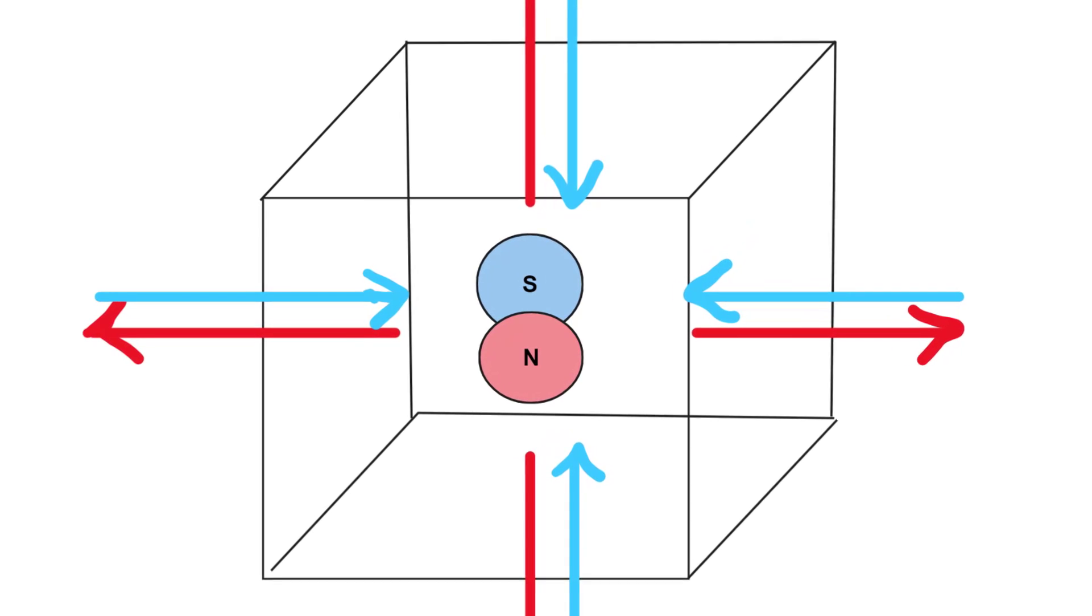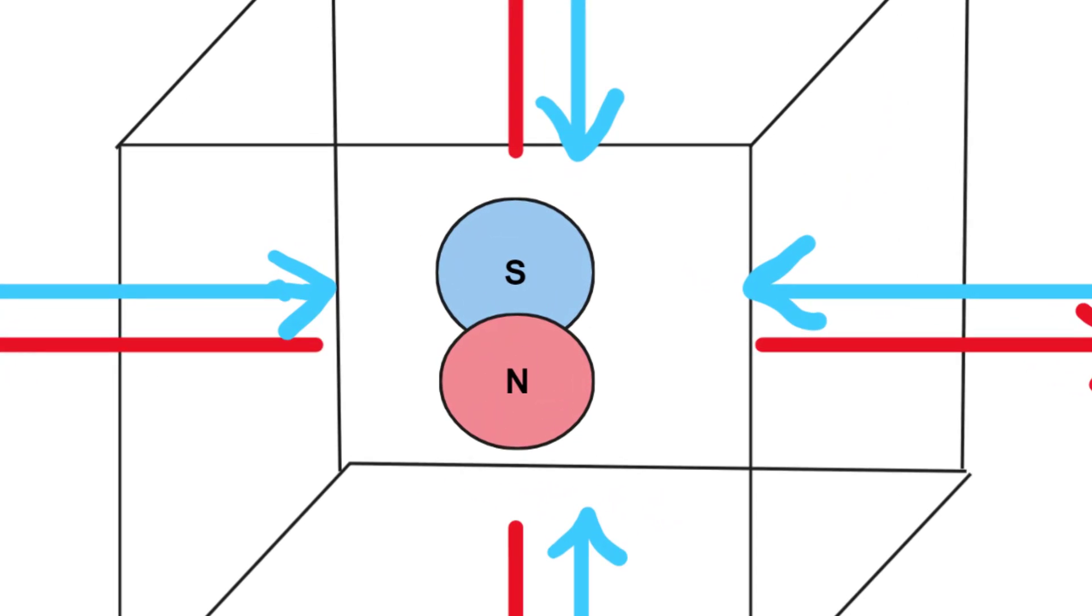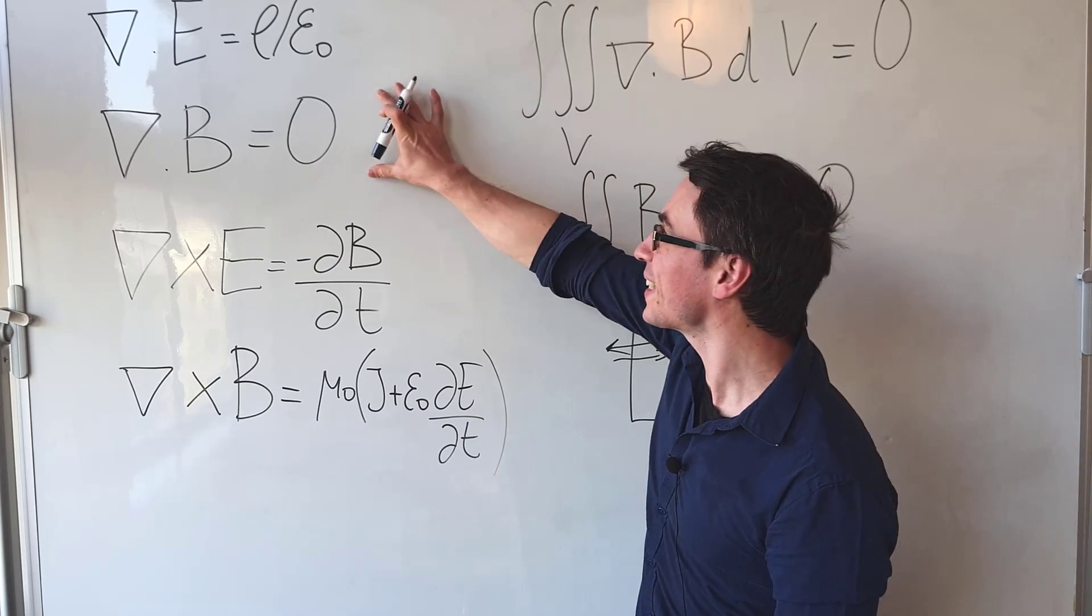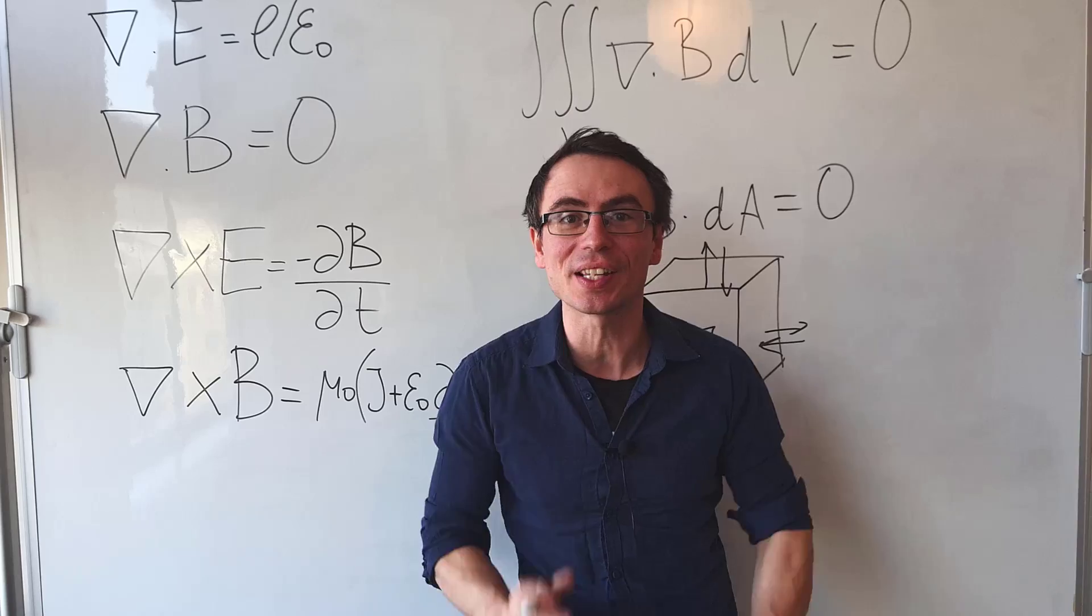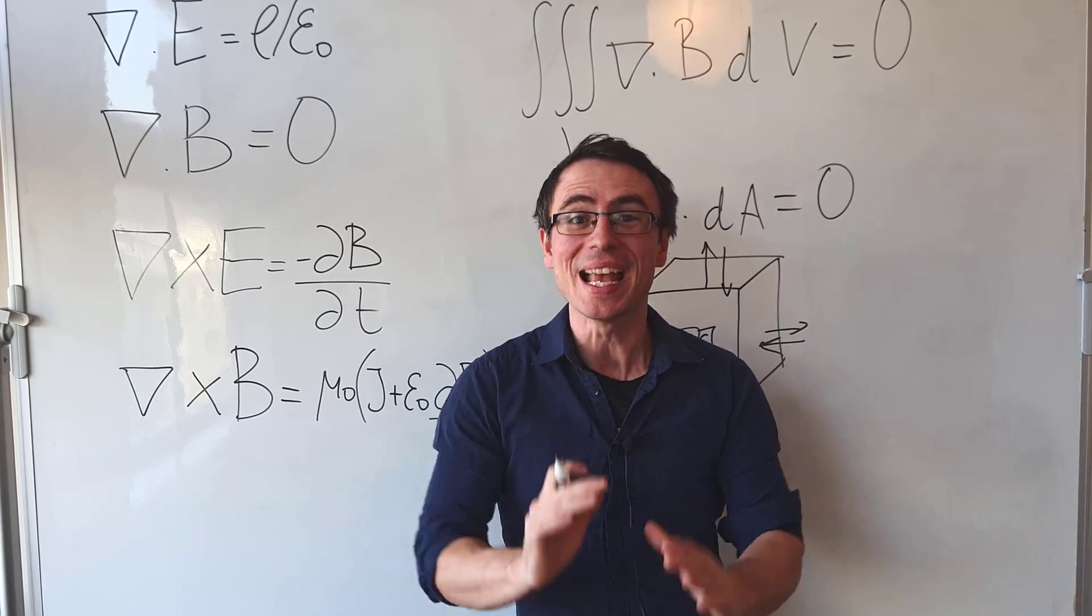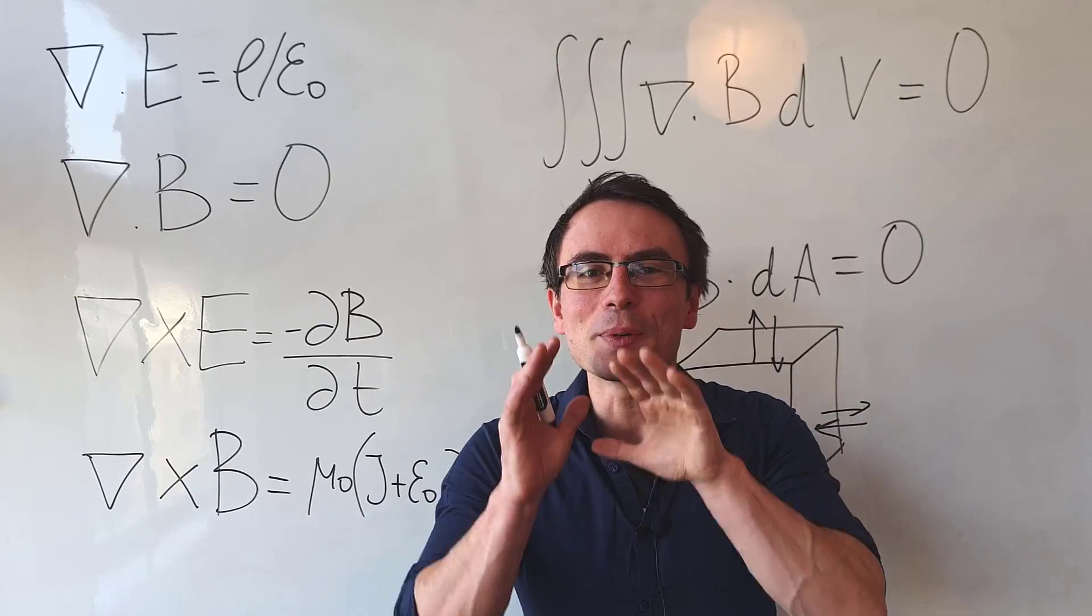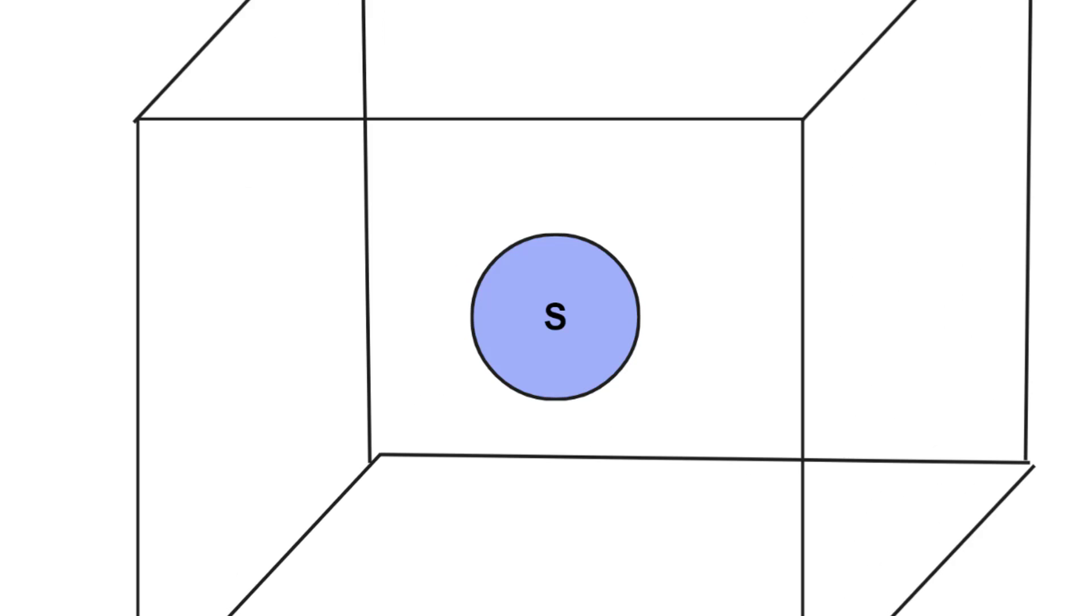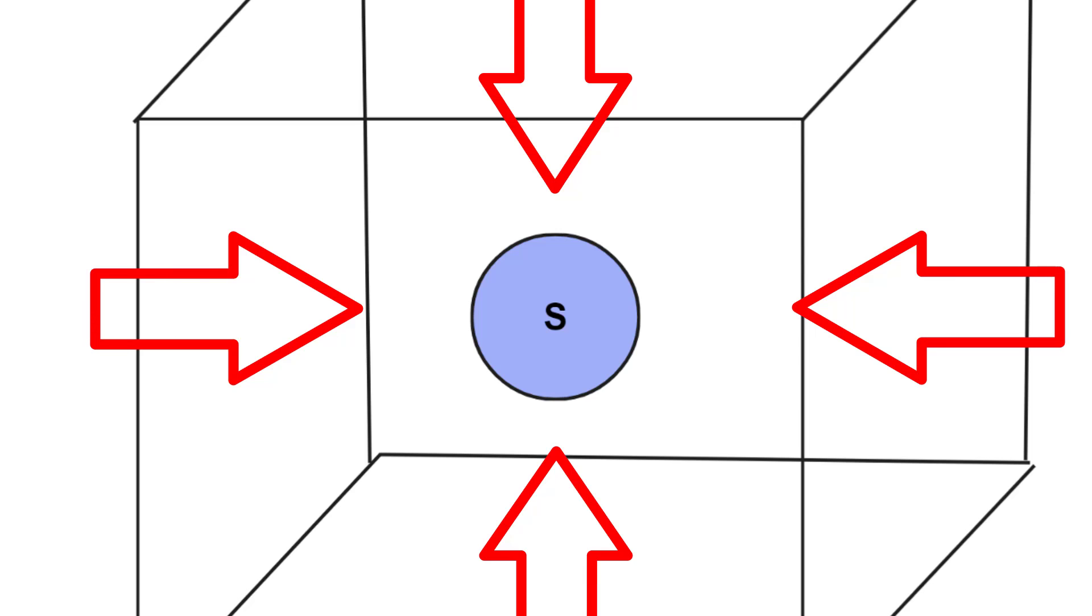The only way this could happen is if there was a north pole and a south pole. In other words, this equation is telling us that magnetic monopoles cannot exist. We can never have a single north pole or a single south pole, because then the divergence of B would not equal zero.